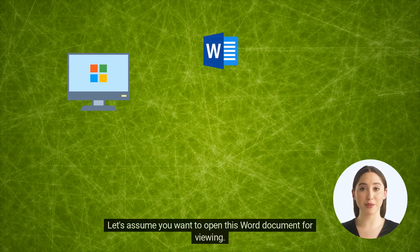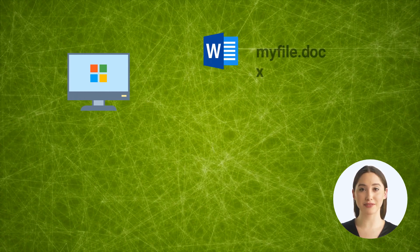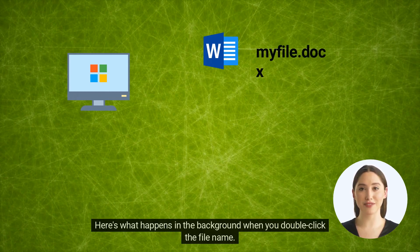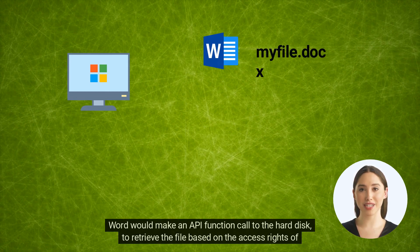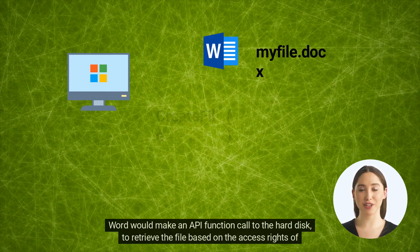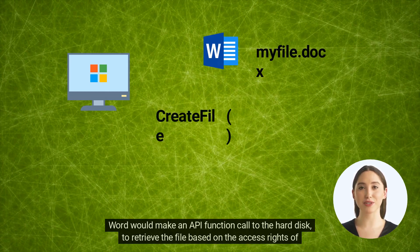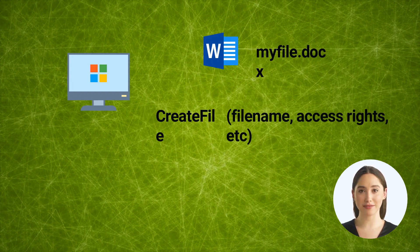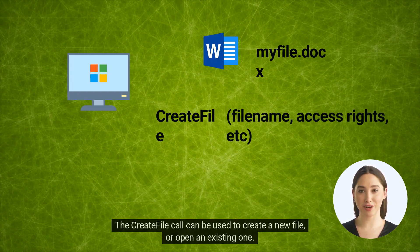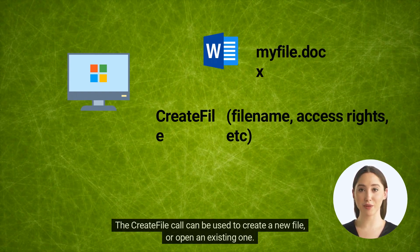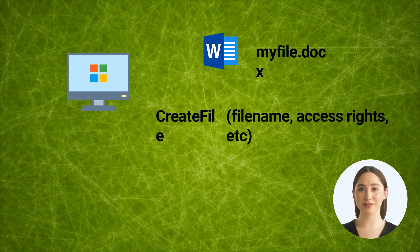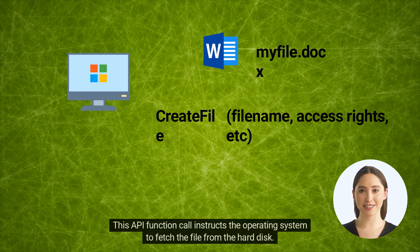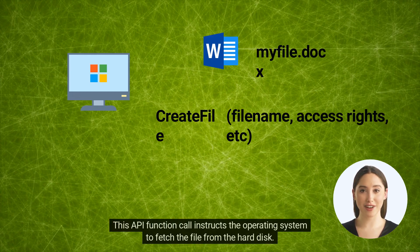Let's assume you want to open this Word document for viewing. Here's what happens in the background when you double-click the file name. Word would make an API function call to the hard disk to retrieve the file based on the access rights of the user opening the file. The CreateFile call can be used to create a new file or open an existing one. This API function call instructs the operating system to fetch the file from the hard disk.